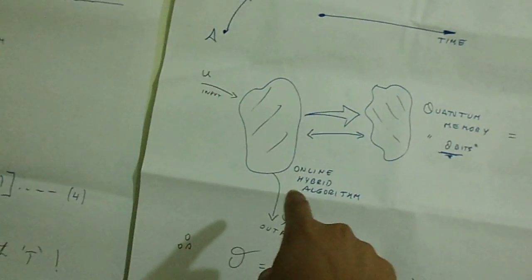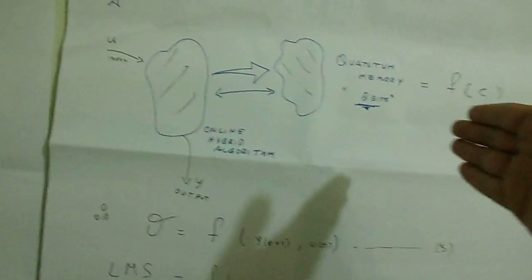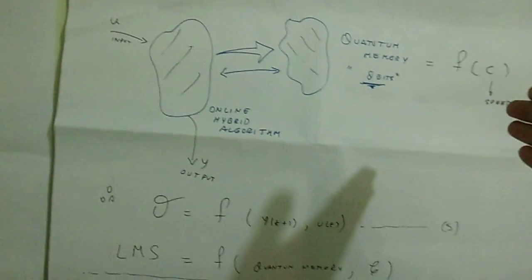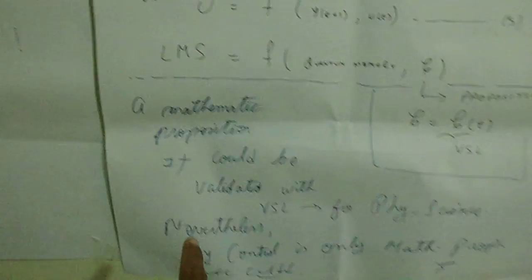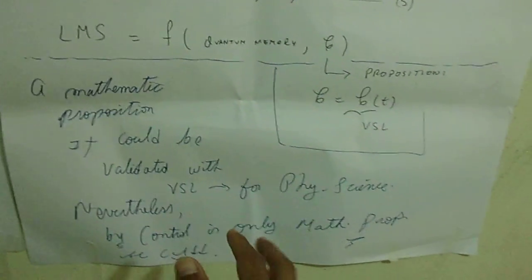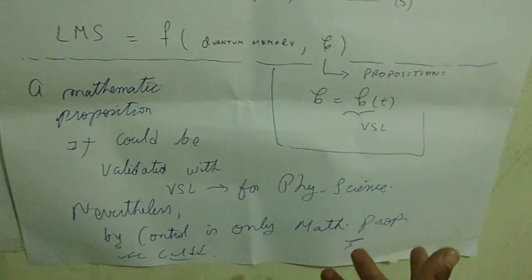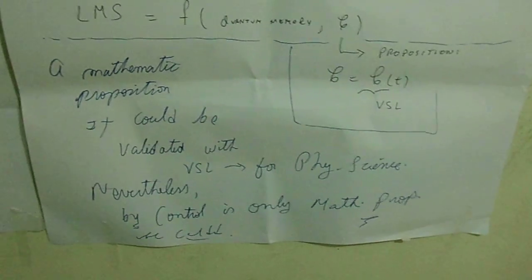In order to get optimizations and saving data to get identifications, online control algorithms working with qubits and maybe in parallel memories could be a good solution. Remember please, this is a mathematical proposition. It could be validated only with variable speed of light - for science, it's only a mathematical proposition.